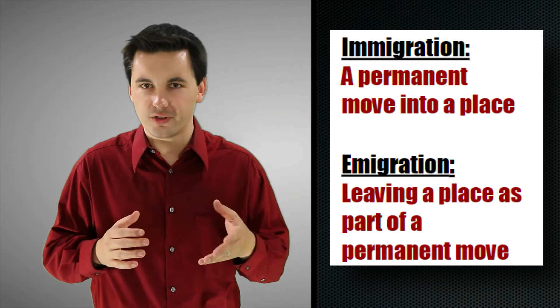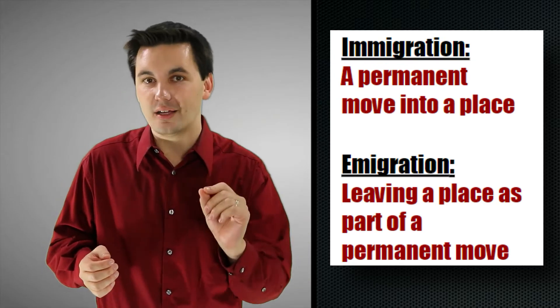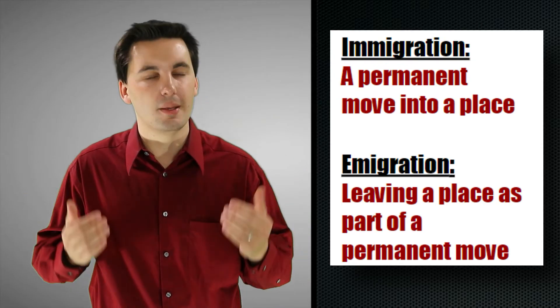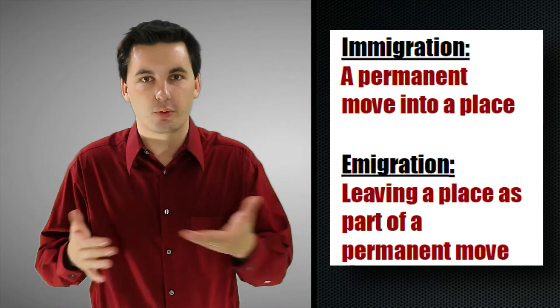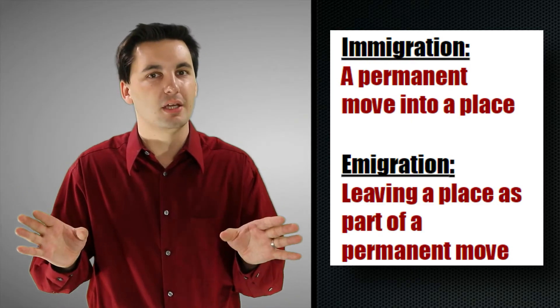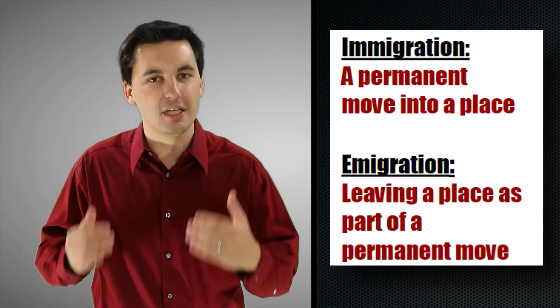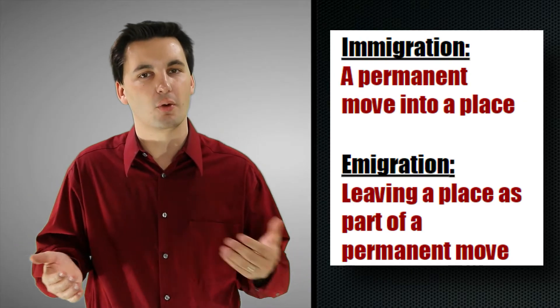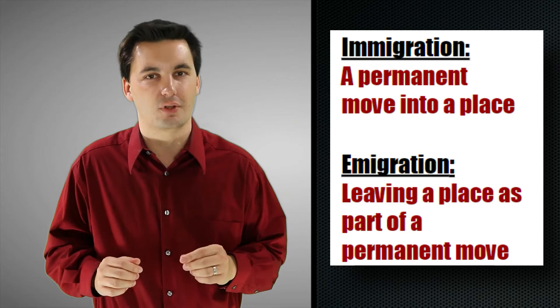Now in trying to remember these terms, just focus on the action that's happening. If people are coming into an area, think of immigrant—they're an immigrant. They're coming into the actual state, the country, the region, the city, whatever it may be. On the other hand, if they're exiting it, E for exit, they're emigrants. So if I'm leaving a country, if I'm leaving my city or my region, then I'm emigrating from that particular geographic location.